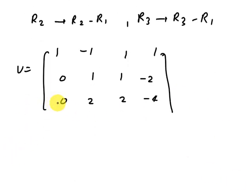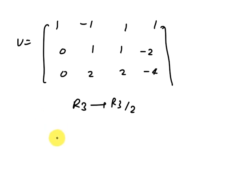Now apply second operation. Second operation is R3 divided by 2. Then we get here 1 minus 1, 1, 1 as it is, this first row, second row as it is. And this one is 0, 2 divided by 2 is 1, 1, minus 2, which is equivalent to this.